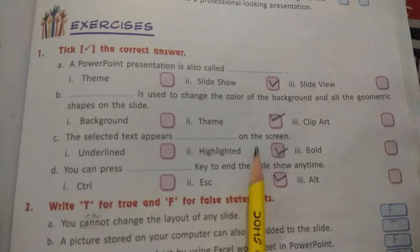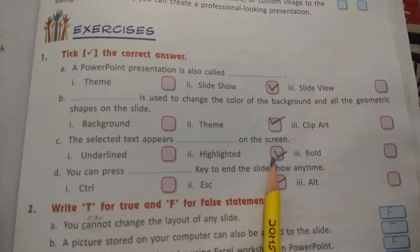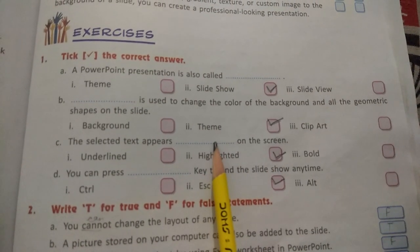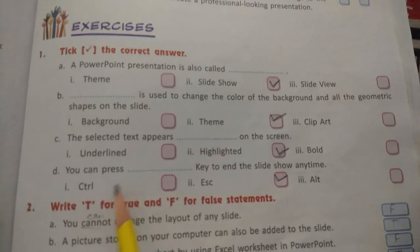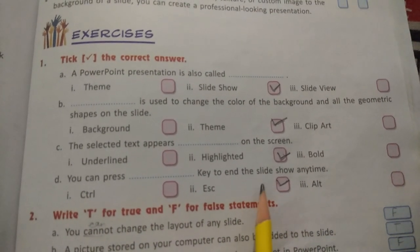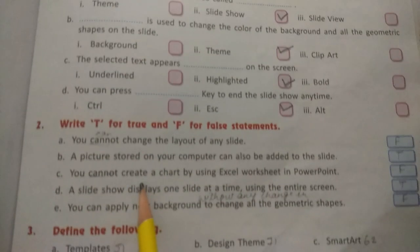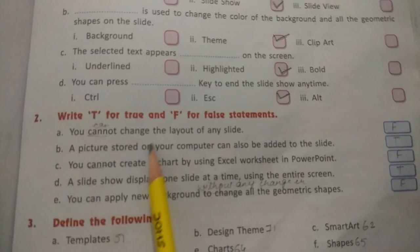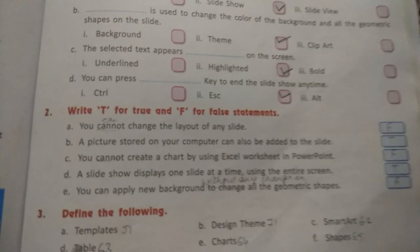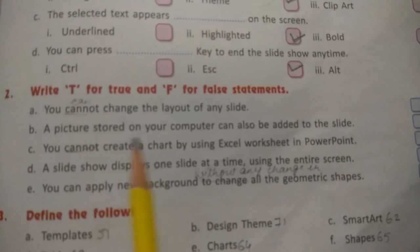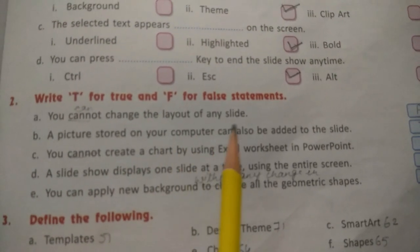The selected text appears dash on the screen - tick highlighted and also write down in fill up. You can press dash key to end the slideshow in time - tick Esc and also write down in fill up. Now exercise number two, write T for true and F for false. Statement number one: you cannot change the layout of any slide.